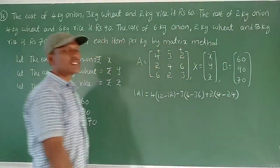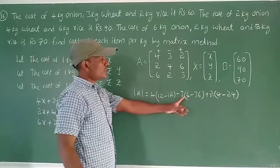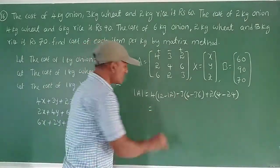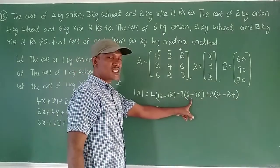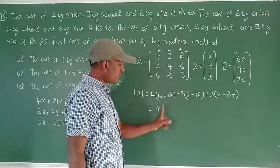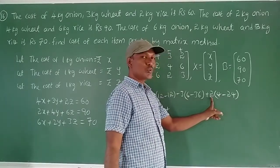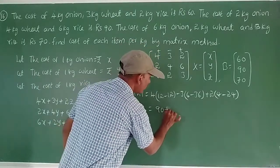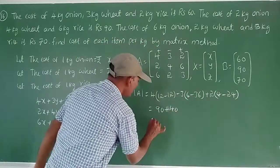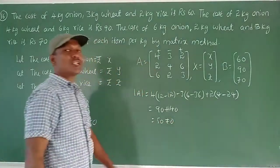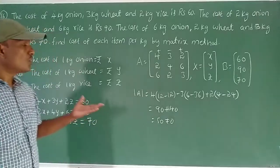Find determinant of A. Expand along first row with signs plus, minus, plus. 4 into (4×3 − 6×2) = 4×(12−12) = 4×0 = 0. Minus 3 into (2×3 − 6×6) = minus 3×(6−36) = minus 3×(−30) = 90. Plus 2 into (2×2 − 4×6) = 2×(4−24) = 2×(−20) = −40. Determinant = 0 + 90 − 40 = 50. Not equal to zero, so non-singular matrix.